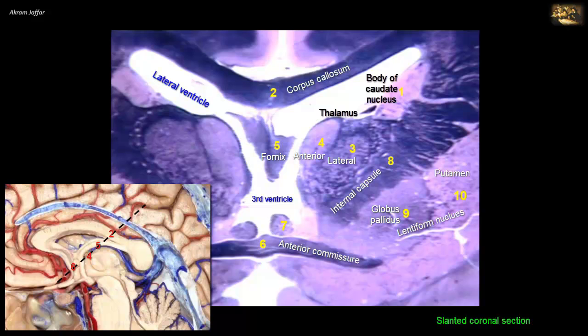The caudate and lentiform nuclei together are called the corpus striatum, involved in the control of motor activity. The caudate nucleus and putamen are anatomically connected and closely related functionally, and are classified as the neostriatum or striatum, while the globus pallidus is designated as the paleostriatum or pallidum. Numerous strands of gray matter join the caudate nucleus with the putamen by cutting across the internal capsule, giving rise to the name corpus striatum. Number 7 is the column of the fornix, on its way to the mammillary bodies.